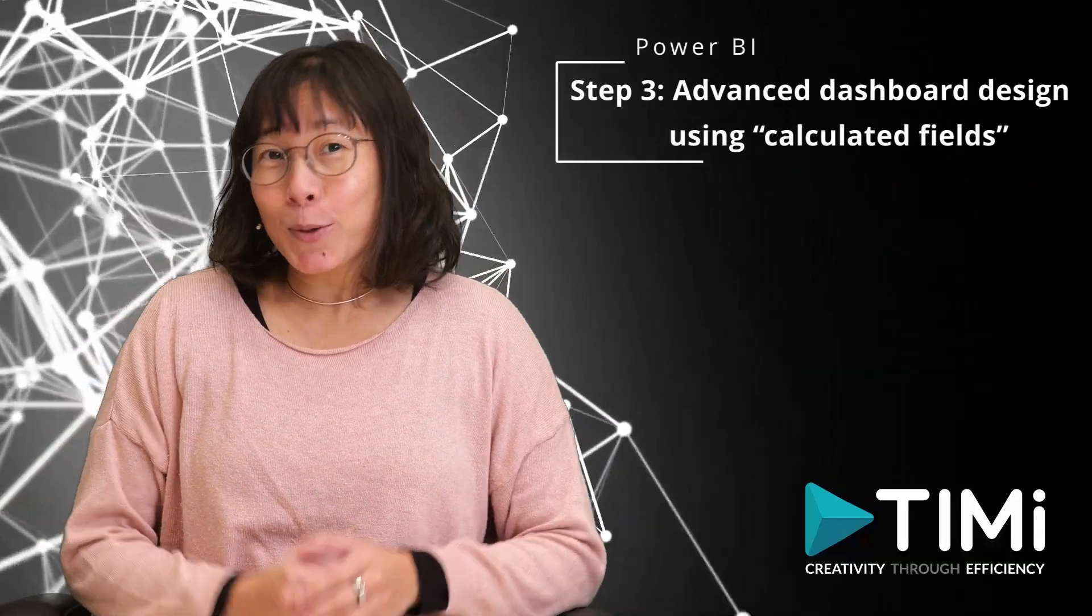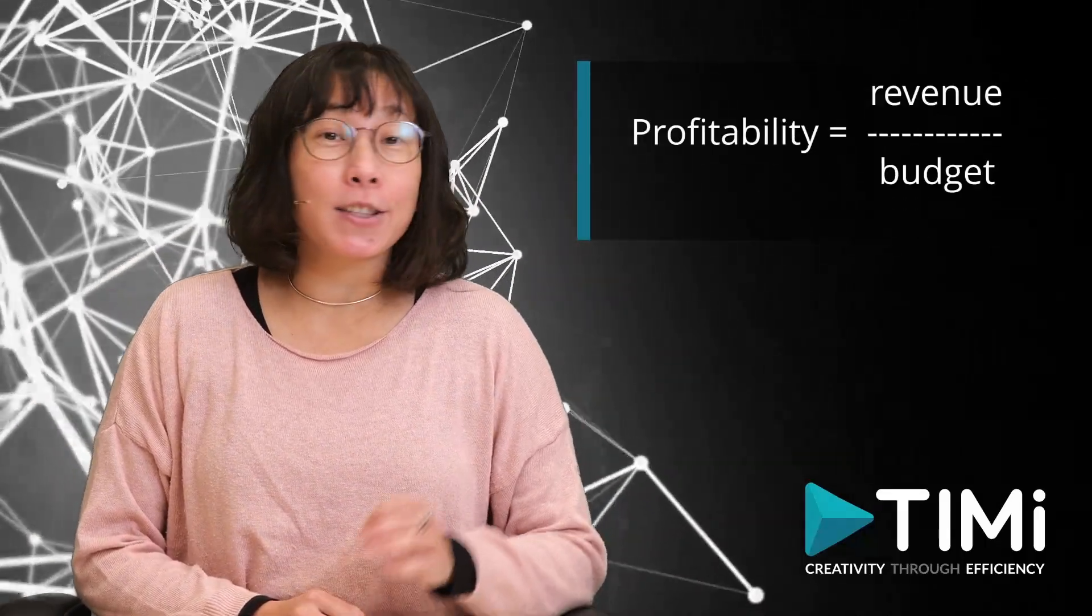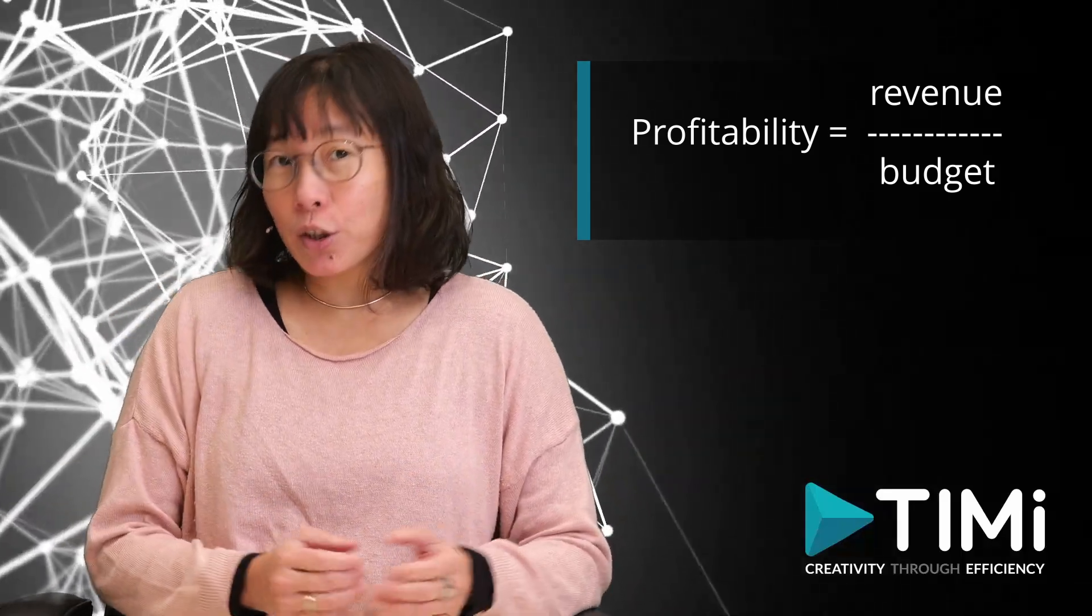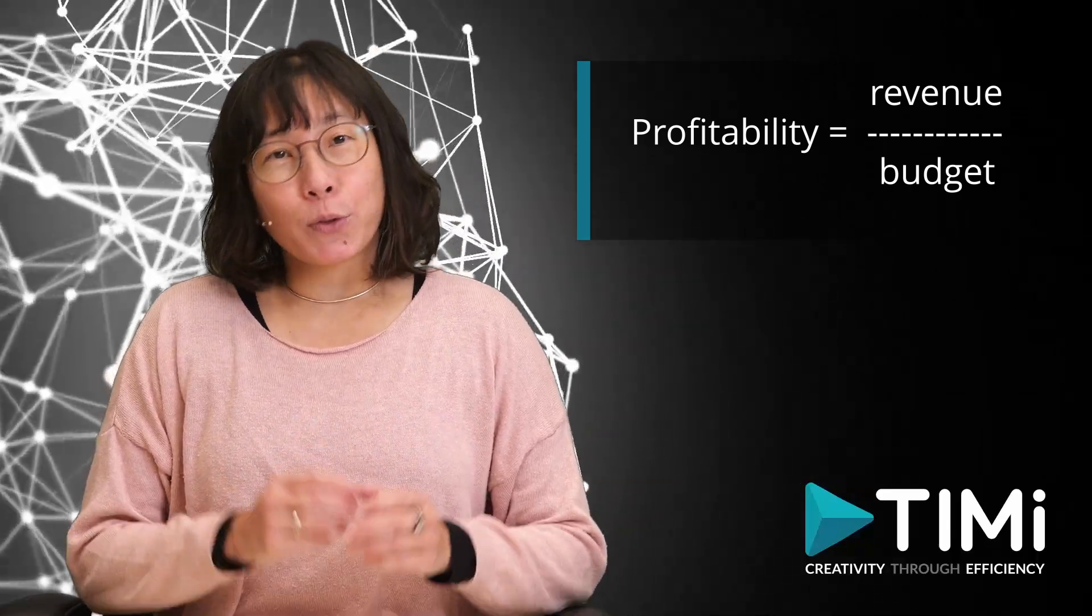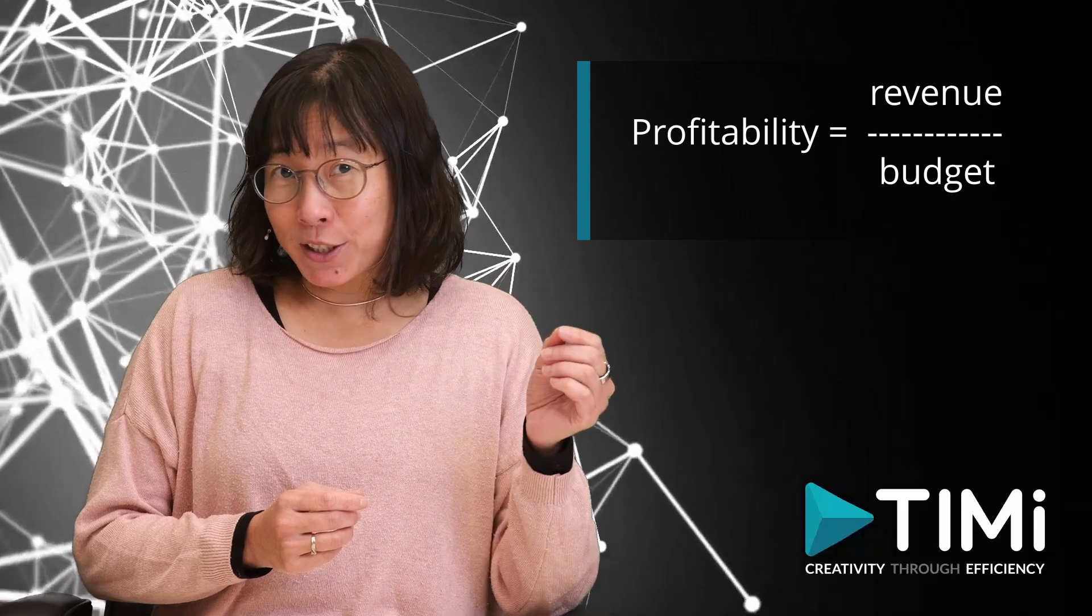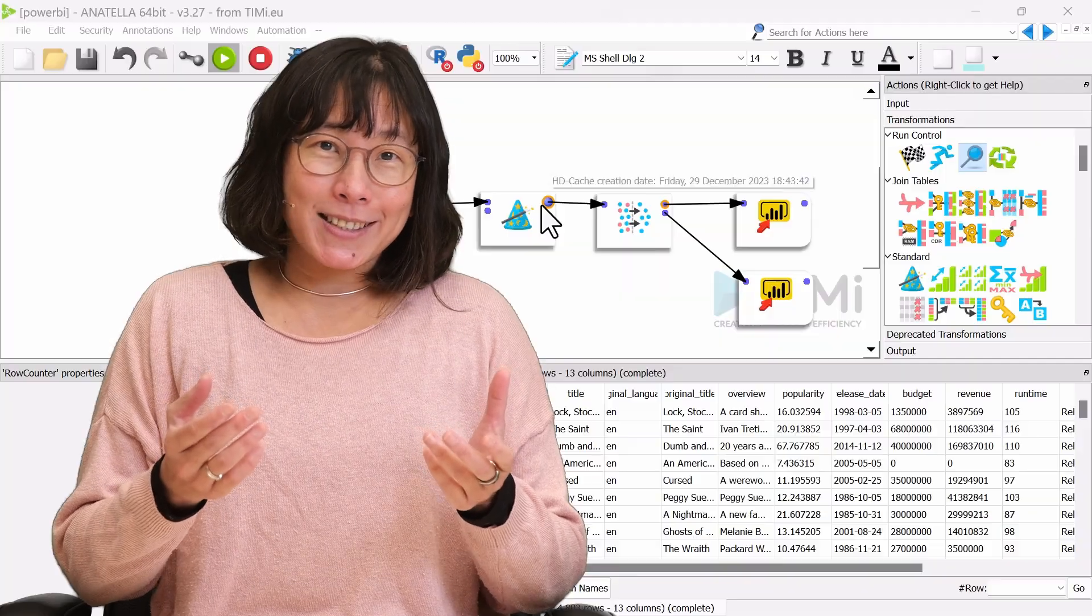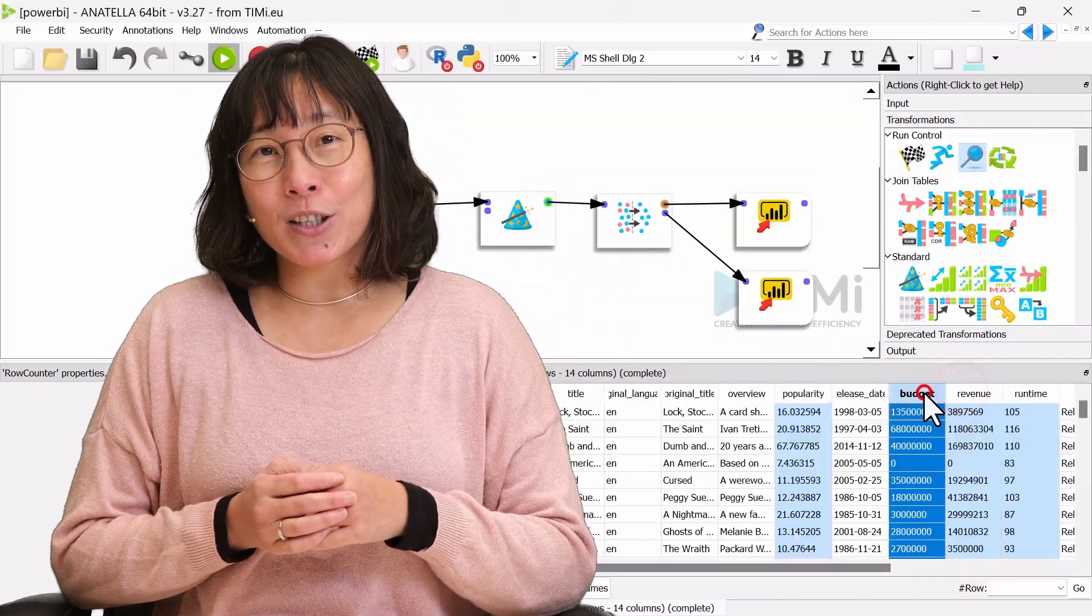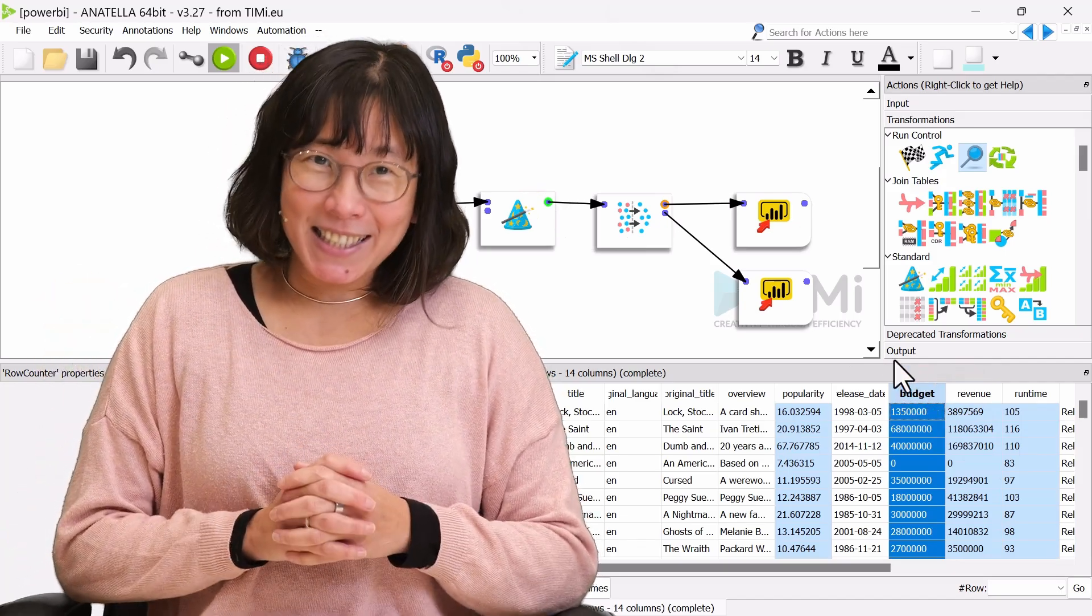Let's now assume that we want to compute how profitable the movies are. Let's define the profitability as the ratio of the revenue generated by a movie divided by the budget of a movie. A profitability of two means that each euro invested in budget will receive two euros as revenue in the end. Inside our dataset, we already have a column named revenue and another column named budget. So the profitability should be easy to compute.